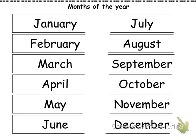We have January, February, March, April, May, June, July, August, September, October, November, December. We always capitalize the names of the months.